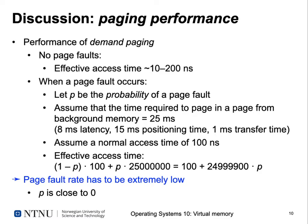When a page is already in main memory, the access is fast — we do the translation step through the MMU and then directly load the value. The effective access time is somewhere in the range of 10 to 200 nanoseconds. But when a page fault occurs, a very complex process starts: the MMU figures out the page is not in memory, generates a trap to the operating system, the OS searches for the page in background storage (a relatively slow disk), loads it, copies it to main memory, then updates the MMU page table entry and restarts the faulting instruction.